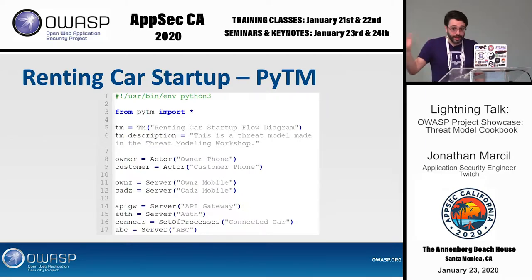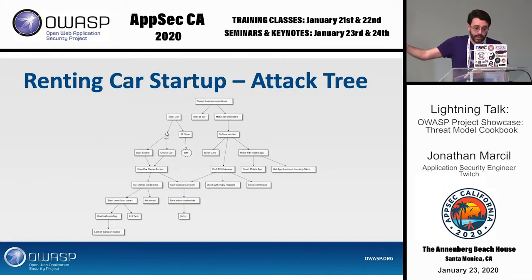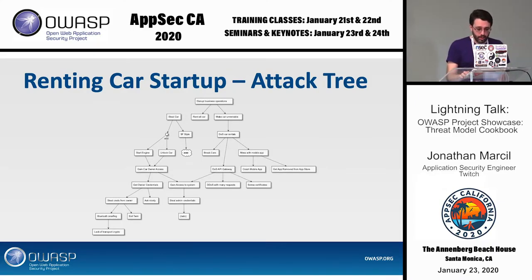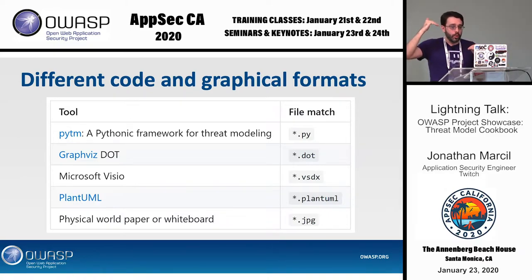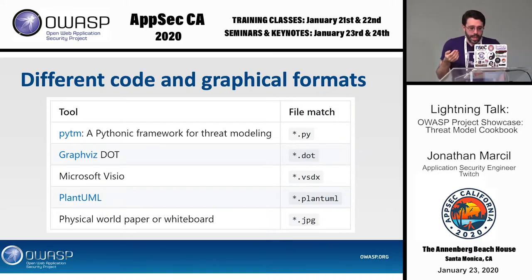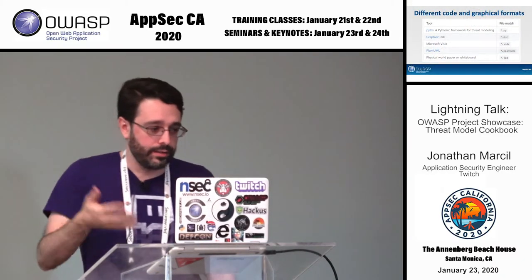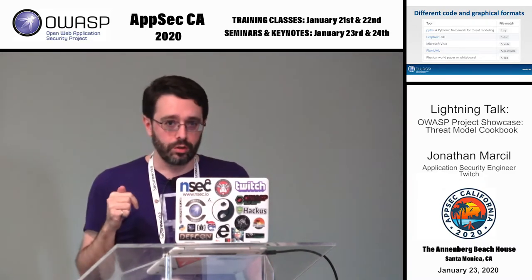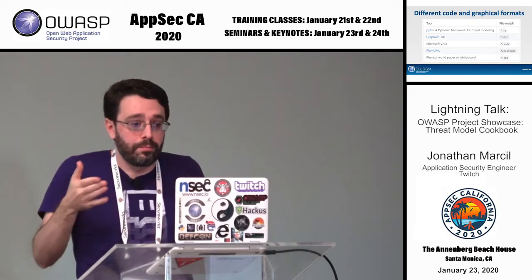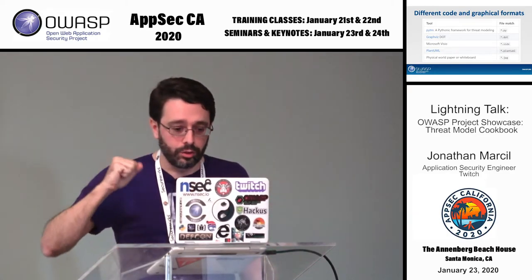We also did the same with an attack tree. The attack tree was made using a tool called PlantUML. In the project, the way the files are organized is that you browse the project, see the names of the examples, and there are file extensions at the end. If it's in Python, it's PyTM. If there are visual files, there's the PlantUML for attack trees. There are even JPEGs for pictures or scans of the hand-drawn stuff.